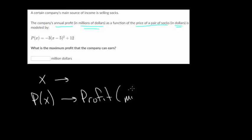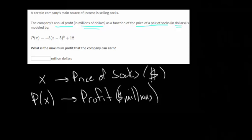And again, this is in millions of dollars. And the x, it's a function of the price of a pair of socks, and that's in dollars. So this is the price of socks. That's going to be in regular dollars, whereas the profit's in millions of dollars. And we want to know what is the maximum profit that the company can earn.